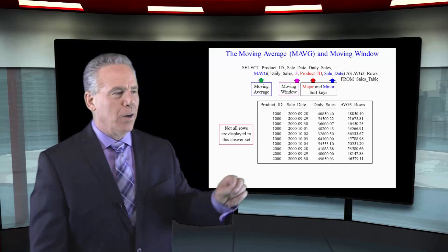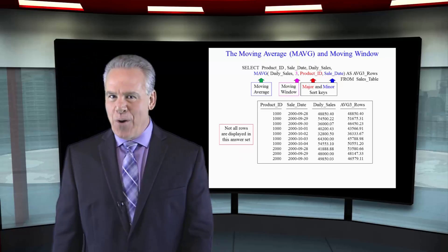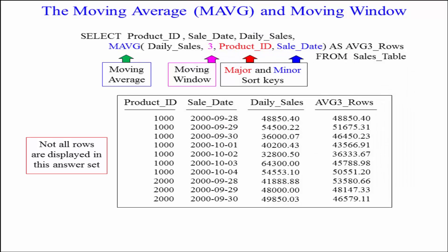Now here we're going to take a moving average of daily sales every three rows after we sort by product ID and sale date. So of course we're going to sort by product ID and sale date first.